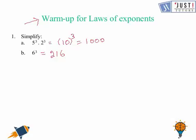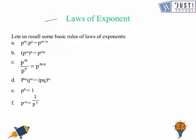Now we move ahead to our topic which is about laws of exponents. We will recall some basic rules. First, if it is p to the power m times p to the power n, this equals p to the power m plus n. For example, 2 to the power 3 times 2 to the power 5 is equal to 2 to the power 3 plus 5, which is equal to 2 to the power 8.